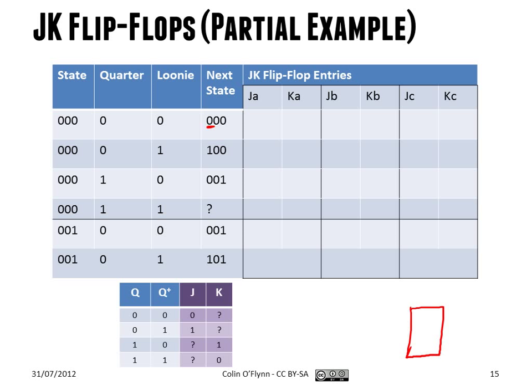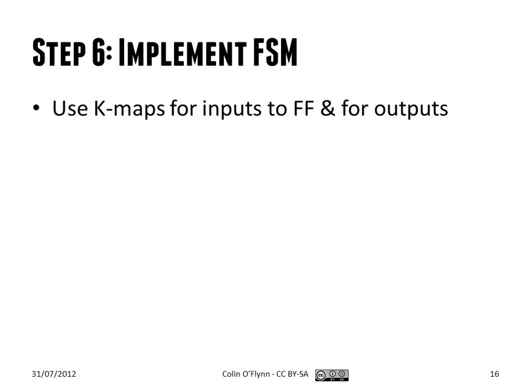With JK flip-flops, the required input is something else. For example, if we require moving to state 0 and the current state is 0, you consult the table and find that J is 0 and K is don't care. So for each state, you have two inputs per flip-flop. Because of all these don't cares, you end up with simplified logic and K-maps with lots of terms grouped together. The disadvantage is it's more complicated to design because there are extra outputs to account for. Just like with counters, we use K-maps to create the logic for the flip-flop inputs and outputs.